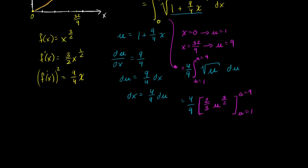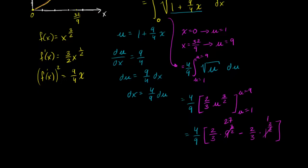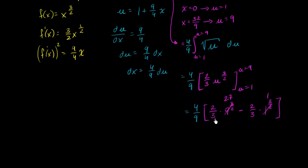And so we're in the home stretch here. This is going to be equal to four ninths times two thirds times nine to the three halves, minus two thirds times one to the three halves. So, nine to the three halves, that is, the square root of nine is three to the third power is 27. And this, of course, is one.